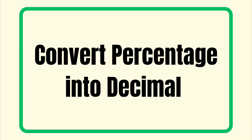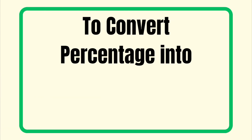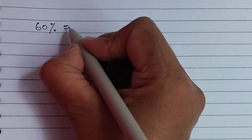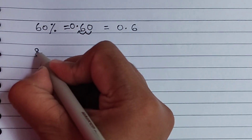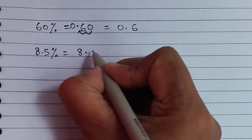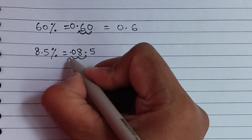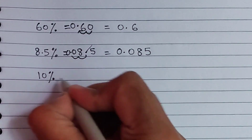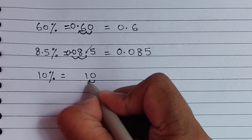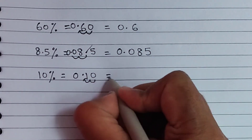Now let's convert percentage into decimal. To convert percentage into decimal, we divide the percentage by 100 — that means we shift the decimal two places to the left. For example, 60%: count two places to the left and mark the decimal, so 60% becomes 0.60, which equals 0.6. Next, 8.5%: shift the decimal two places to the left, it becomes 0.085. Next, 10%: shift two places to the left, it becomes 0.10, which equals 0.1.